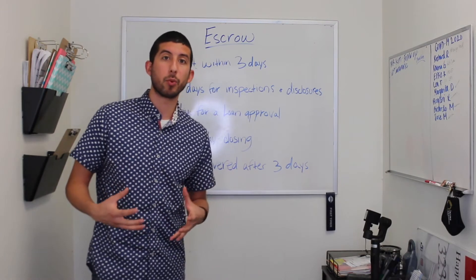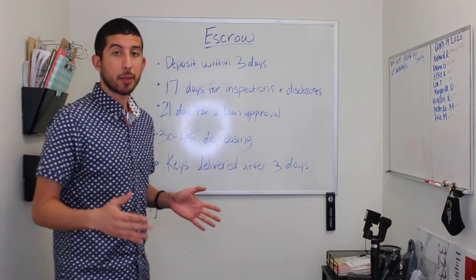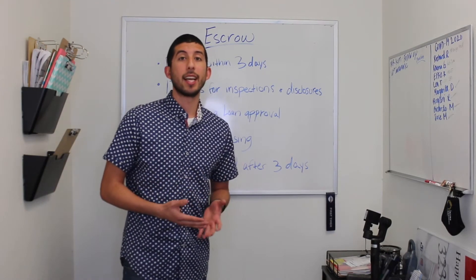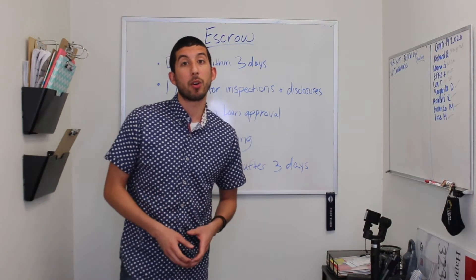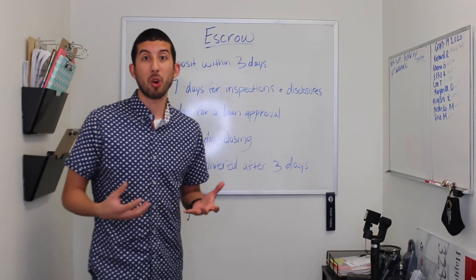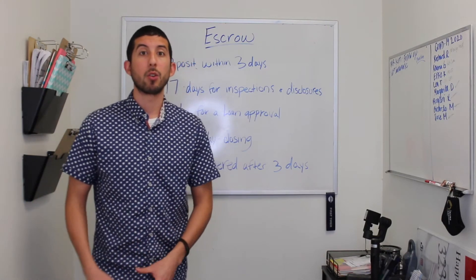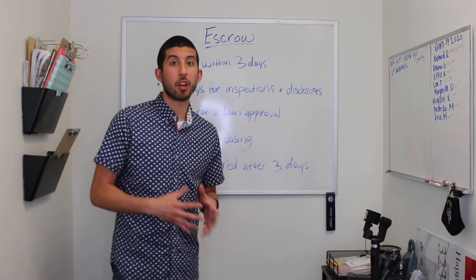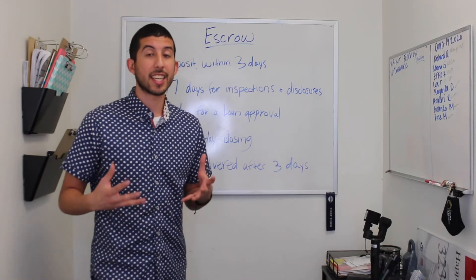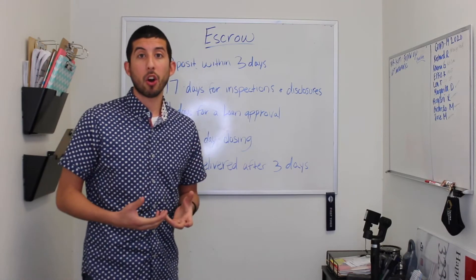These are contingency periods, which means that a buyer within those contingency periods, if they don't perform for whatever reason, can back out and recoup the full deposit. For example, if you're a buyer and you get denied your loan on the 24th day of escrow, you're at risk of losing that deposit. These contingencies are there for the buyer to use just in case anything goes wrong.